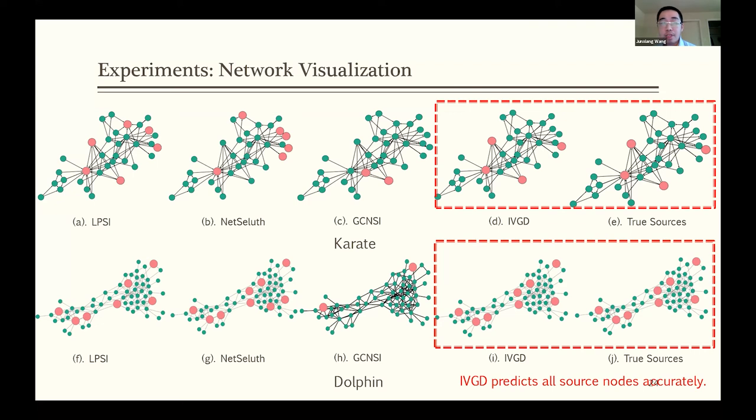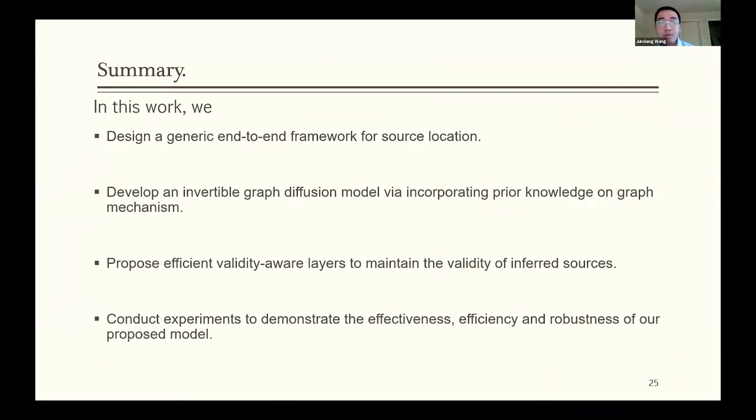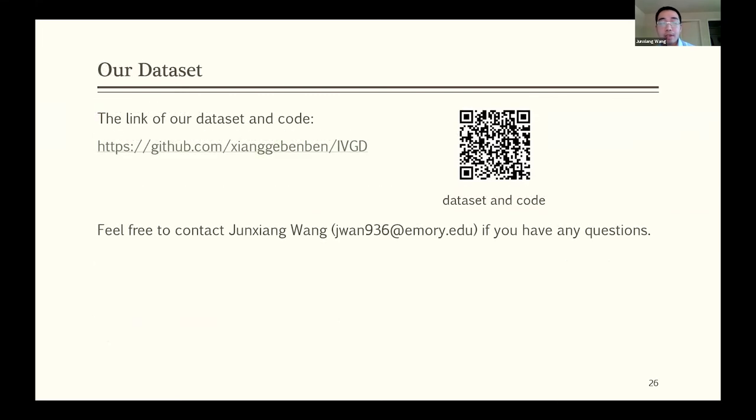Let me summarize my presentation. In this work, we designed a generic end-to-end framework for the source localization problem. We developed an invertible graph diffusion model and proposed efficient validity-aware layers to maintain the validity constraint of the graph source. Finally, multiple datasets have been utilized to demonstrate the performance of our proposed IVGD model, which show that our model is very effective, very efficient and very robust. We have published our code on GitHub. Here's the link and the QR code. If you're interested in our work, feel free to contact me and I'm happy to answer any questions. Thank you so much for attention to my work.